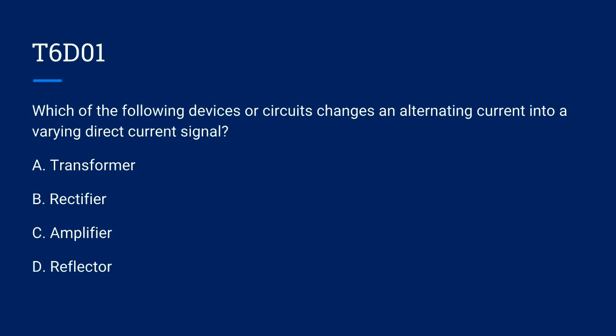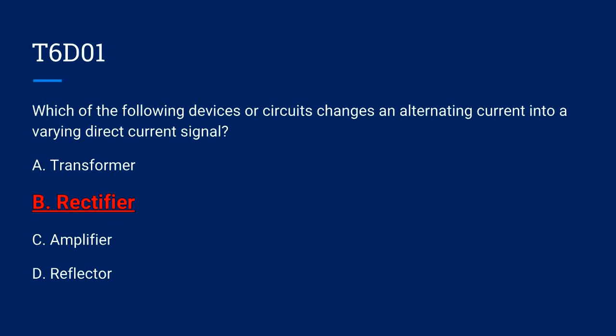T6D01. Which of the following devices or circuits changes an alternating current into a varying direct current signal? A. Transformer. B. Rectifier. C. Amplifier. Or D. Reflector. The correct answer is B. Rectifier.